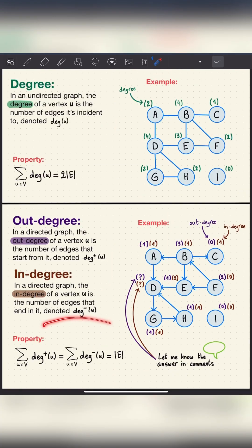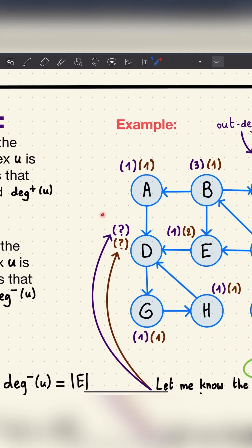One property is that the sum of outdegrees of all vertices is equal to the sum of indegrees of all vertices, which is equal to the number of edges. If you understood, let me know in the comments the outdegree and the indegree of vertex d.